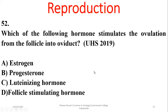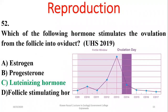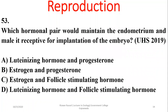Question 52: Which hormone stimulates ovulation? It is the luteinizing hormone (LH), which stimulates ovulation in females during the menstrual cycle. Question 53: Which hormone pair maintains the endometrium and makes it receptive for implantation? It is the pair of estrogen and progesterone — beta is the right option.